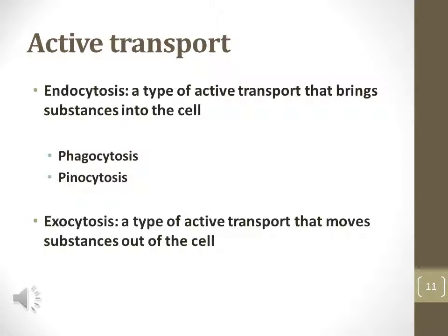Phagocytosis is a type of endocytosis that brings solid substances into the cell. Pinocytosis is a type of endocytosis that brings liquid substances into the cell.